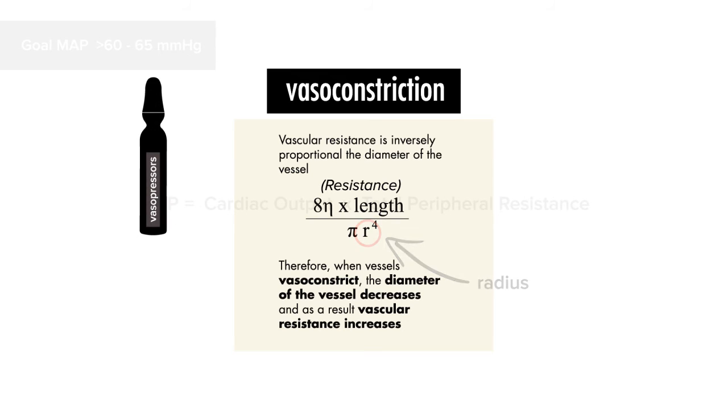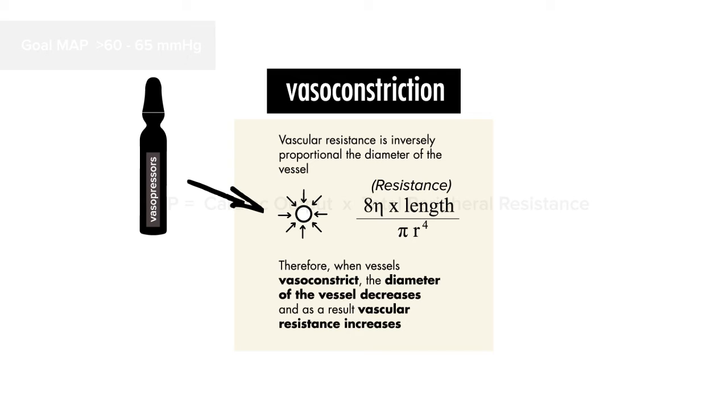So what pure vasopressors actually do is they clamp down on our vessels, causing a decrease in the diameter of the vessel. By doing this, you increase resistance, causing an increase in blood pressure and mean arterial pressure.